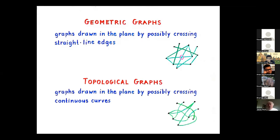We don't restrict ourselves to straight line segments. If we allow any continuous arcs as edges, we call them topological graphs — this is a technical term. Many of the conjectures make perfect sense for topological graphs, but we often consider them only for geometric graphs because even for straight-line drawings, there are difficulties we cannot overcome.